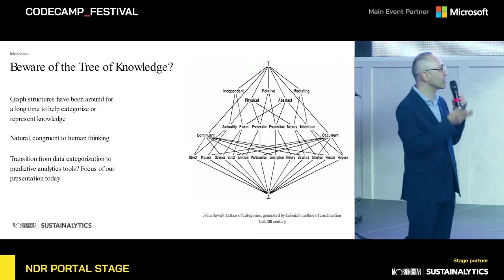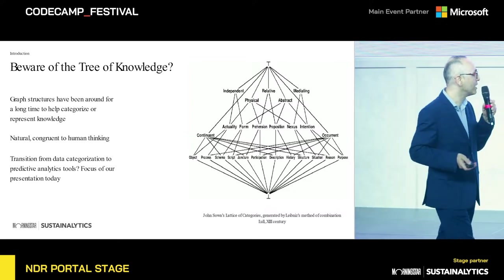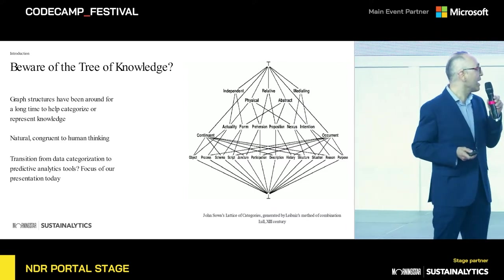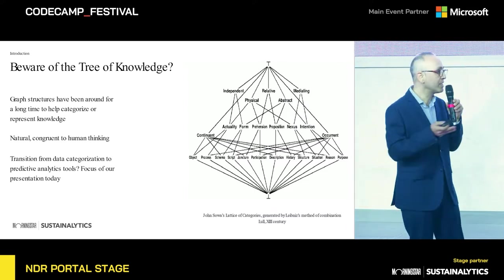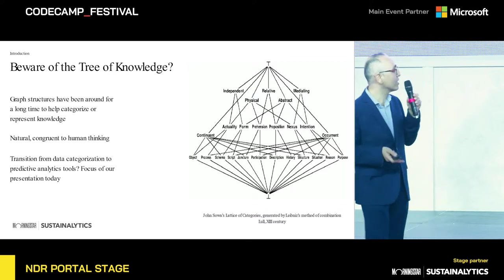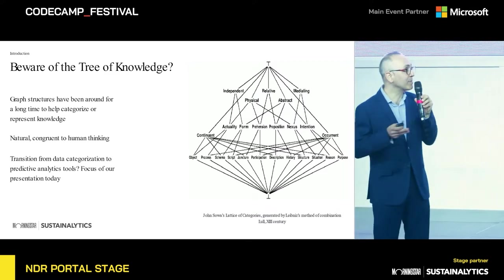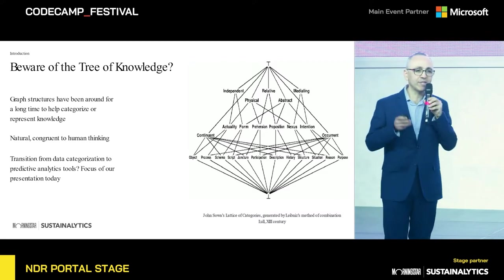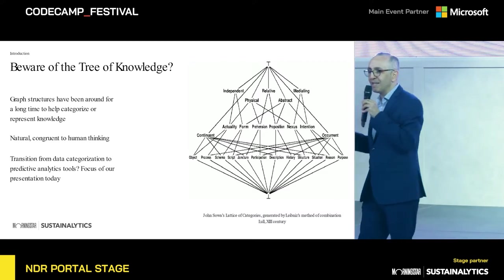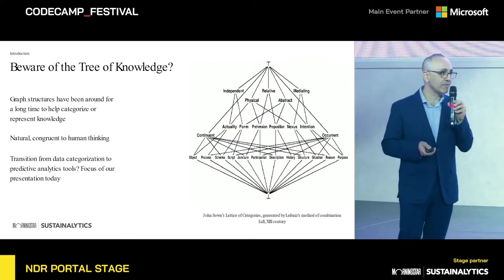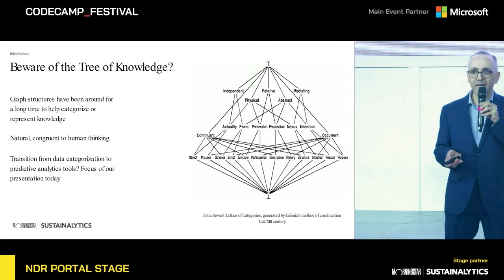This is Aristotle's knowledge graph as presented in the 13th century by Ramon Llull. And then, fast forward a couple of centuries, and you see John Soba's use of Leibniz's methods to represent all the possible categories of knowledge and concepts, again, as another knowledge graph. Fast forward a couple of hundred years, and we're here today.